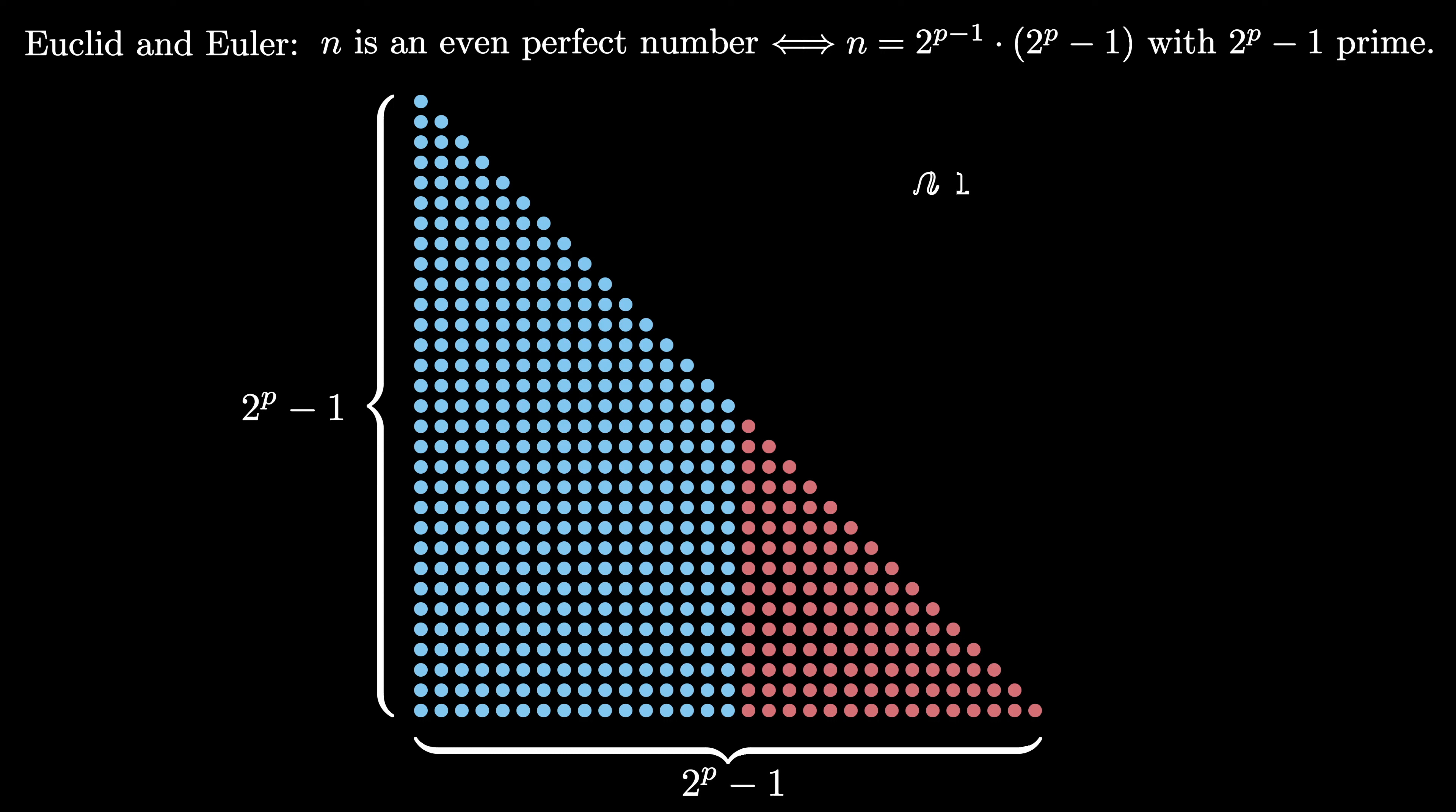But this means that any even perfect number can fit into a triangular array with a base of length 2 to the p minus 1, so that n is an even perfect number if and only if n is the 2 to the p minus 1 triangular number, where 2 to the p minus 1 is prime.